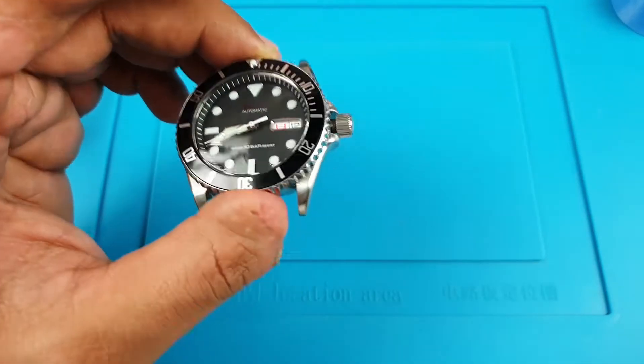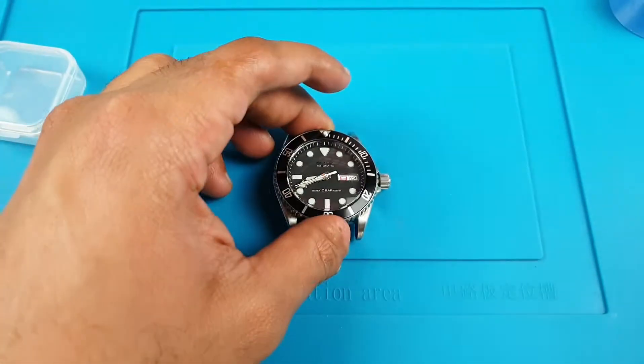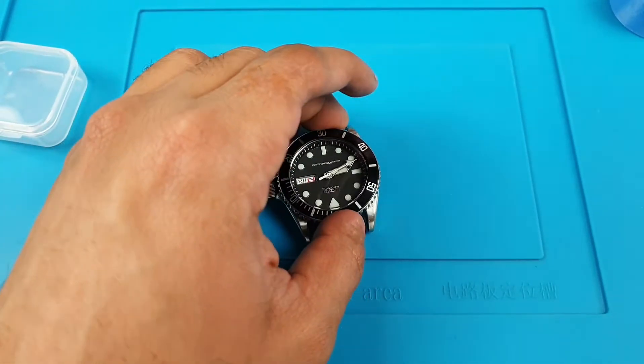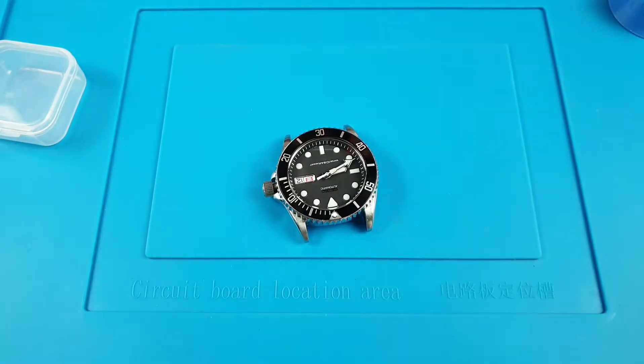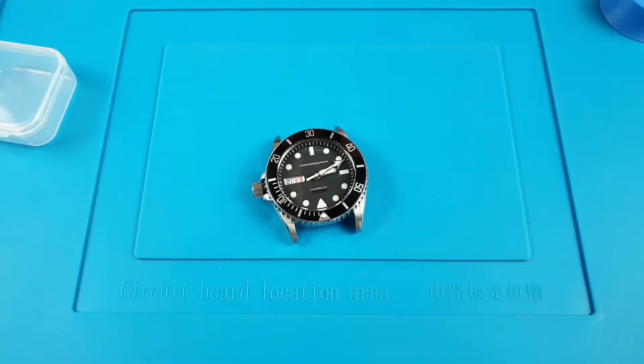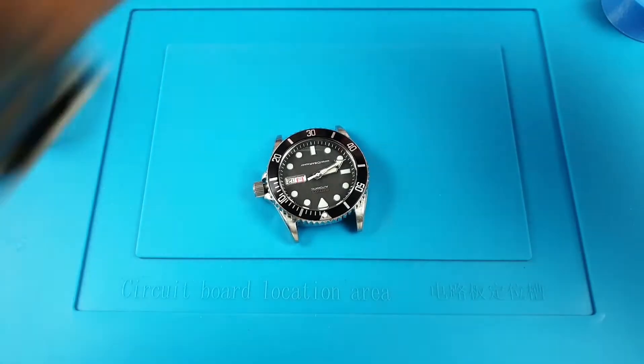Welcome to the channel, thank you for tuning in. On today's episode of Just For The Modders, we're going to be looking at something very specific. We're going to be learning today how to remove the date and day window on a Seiko Epson NH36 movement.